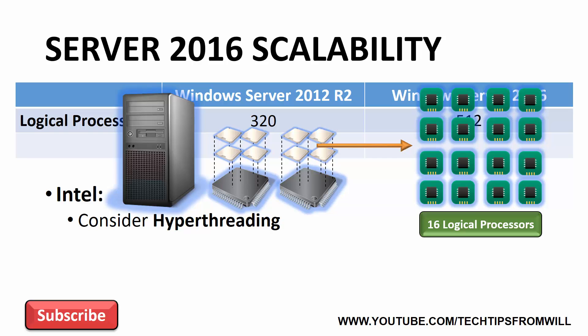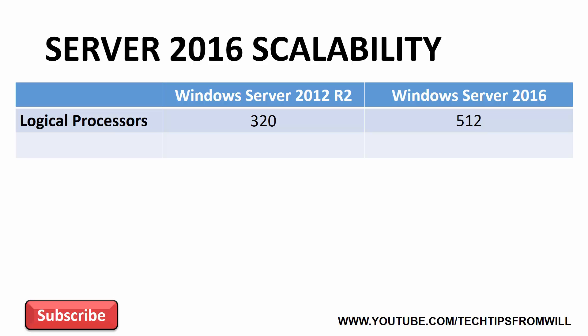Understand, although Hyper-Threading does give you more logical processors when it is enabled, you are working the cores in your system extremely hard, which is why some administrators prefer not to use it. Now let's have a look at RAM memory. Windows Server 2012 R2 is capable of addressing up to 4TB of RAM memory in a physical server. With Windows Server 2016, and with virtualization and cloud computing continuing to take off, Microsoft has seriously ramped up the scalability of RAM memory to a tremendous 24TB per physical server. Although you might be hard-pressed to find a motherboard that supports that much RAM, it pays to know that Windows Server 2016 will support that much.